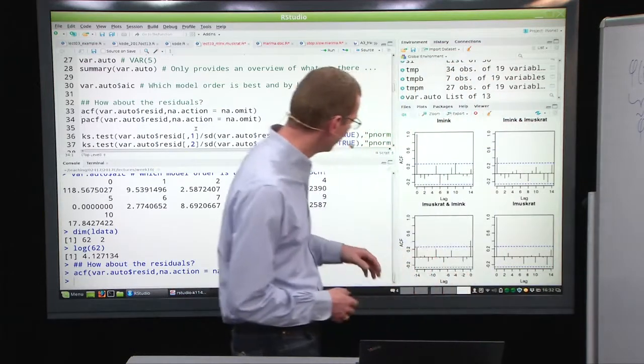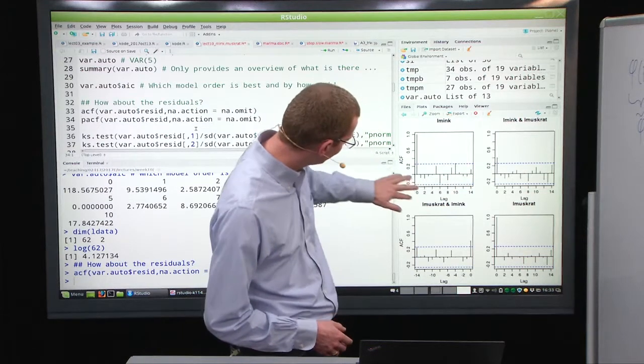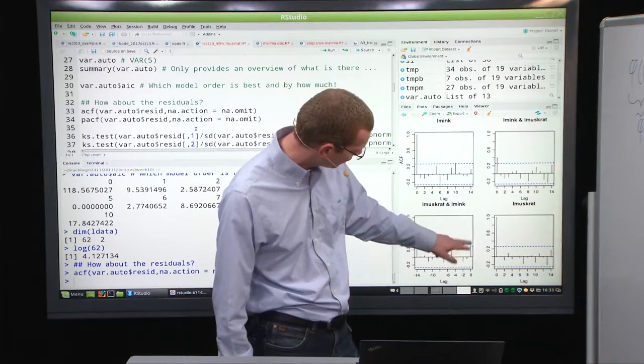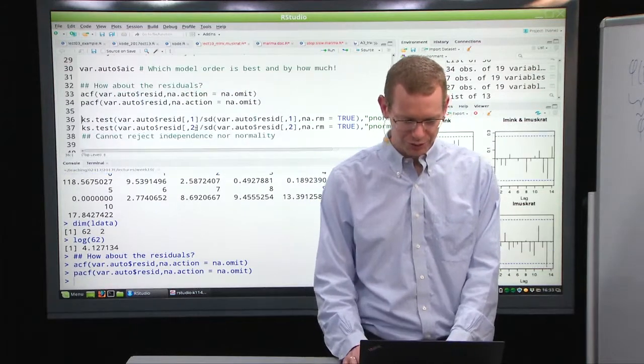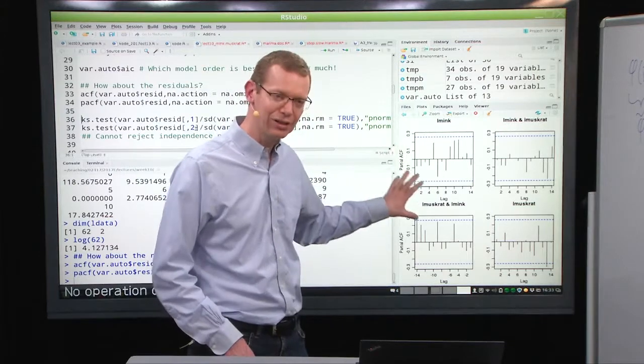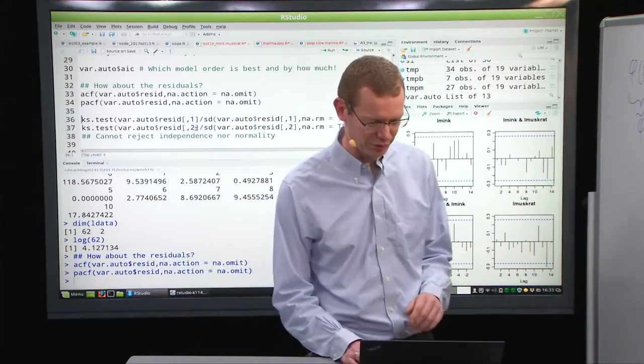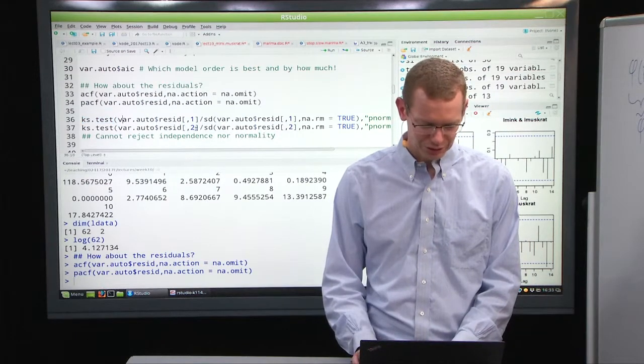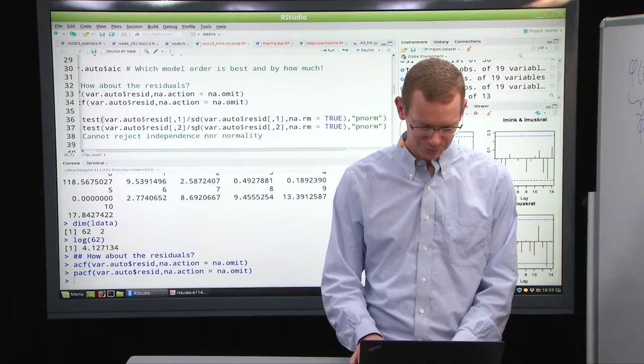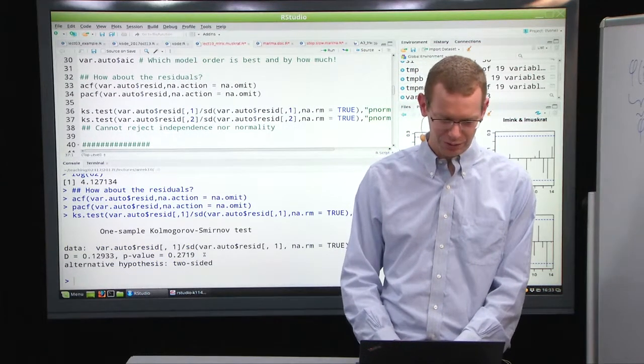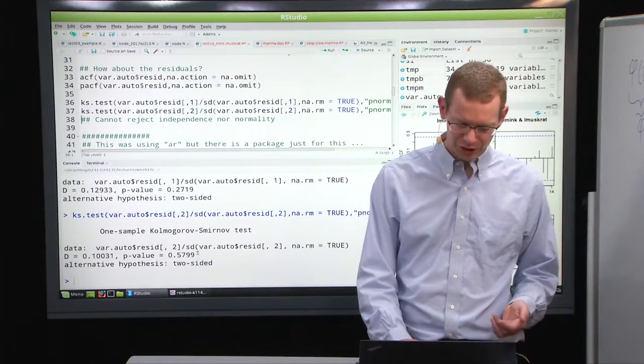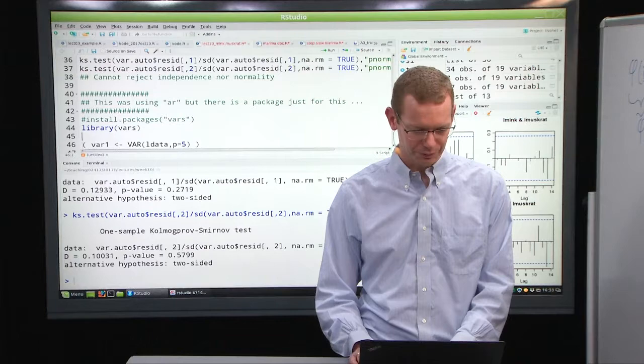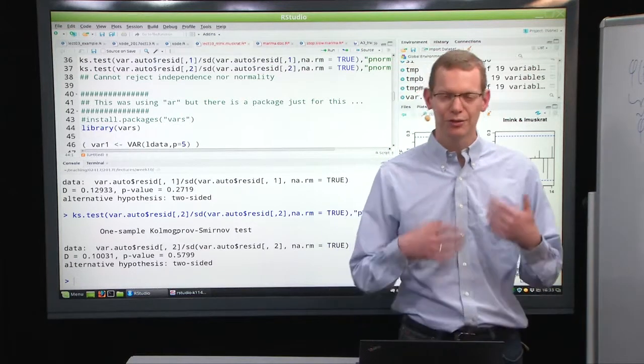Let's see how the autocorrelation structure is for that. Well, basically, what we see is that the ACF for the mink is fine, for the muskrat is fine, and the cross-correlation is also fine. There's a little bit of correlation left in lag zero, but that's it. The partial autocorrelation function is just calculated for reference, but since there's nothing in the ACF, you should not expect anything in partial autocorrelation function. You should also test the distribution assumption. One option is to do the Kolmogorov-Smirnov test, take the residuals normalized by the standard deviation, and use the pnorm. We get a p-value of 0.27, so it's not significant. And for the other variable, we get a p-value of 0.58. Again, not significant, so we cannot reject that things are normally distributed.